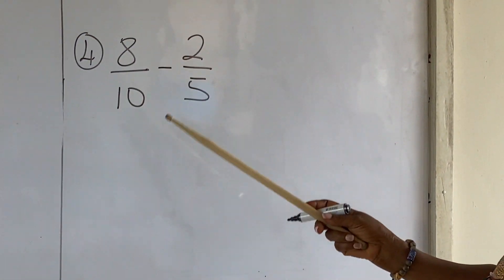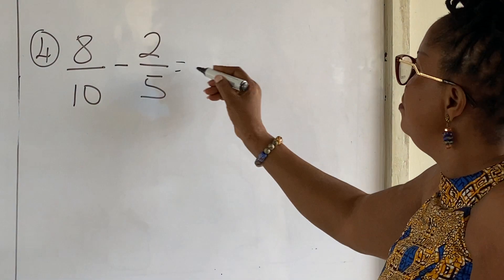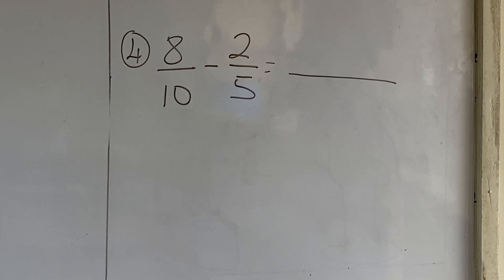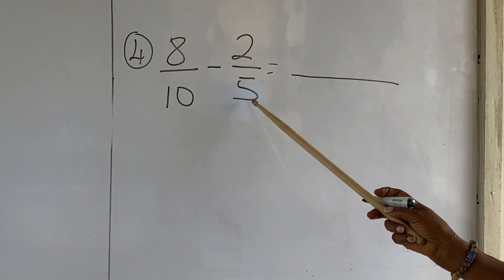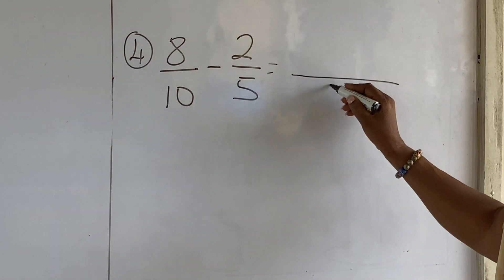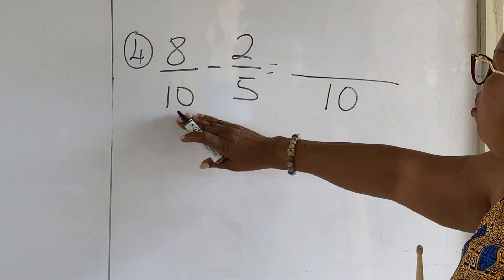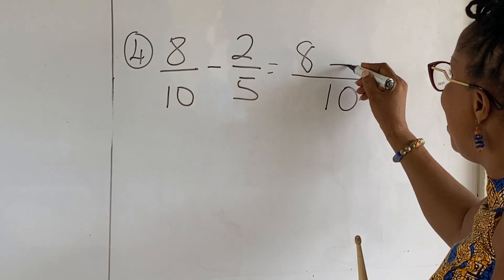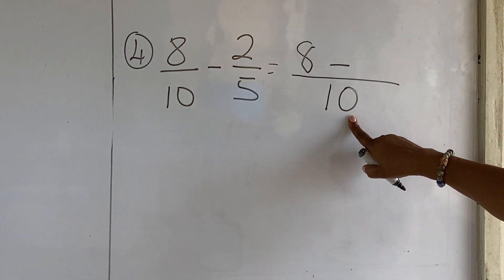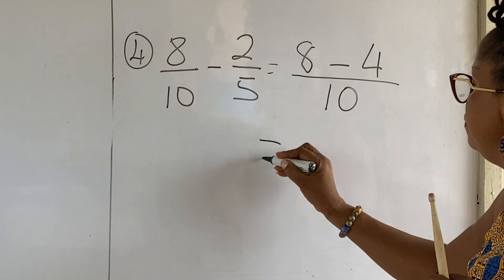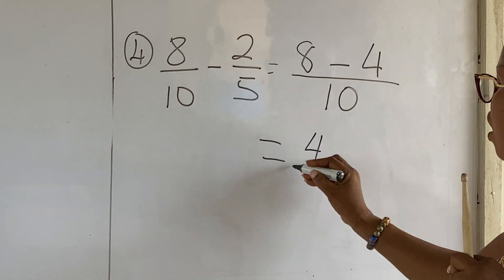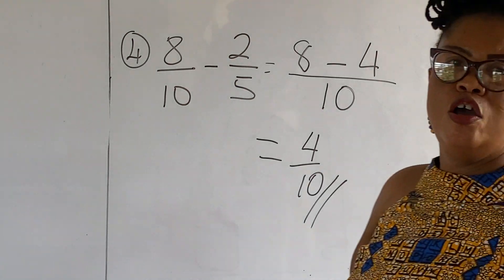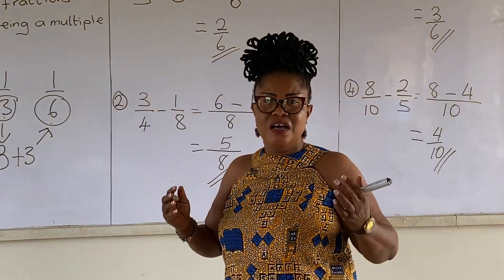Now, eight over ten minus two over five — one denominator being a multiple of the other. Ten is a multiple of five, so our LCM here will be ten. Ten will go into ten one time. One times eight is eight. Minus — five will go into ten two times. Two times two is four. Eight minus four is four over ten. You can leave your answers like this or in simplest form — either is correct.